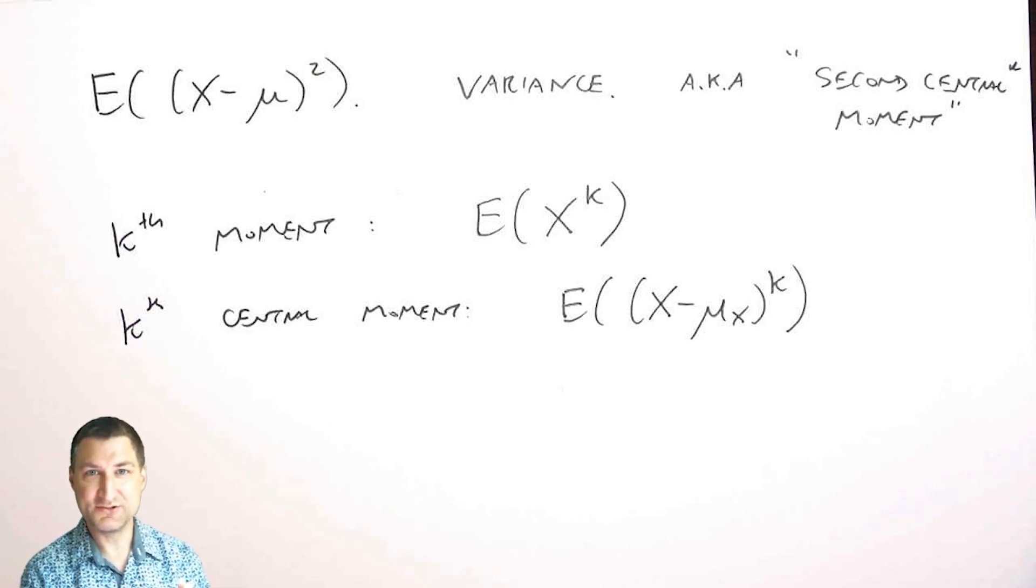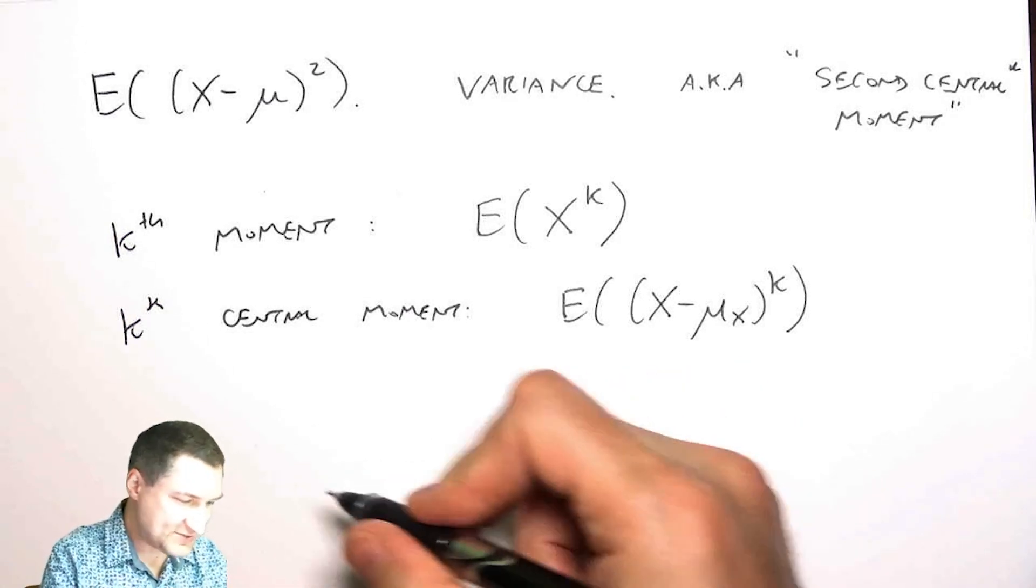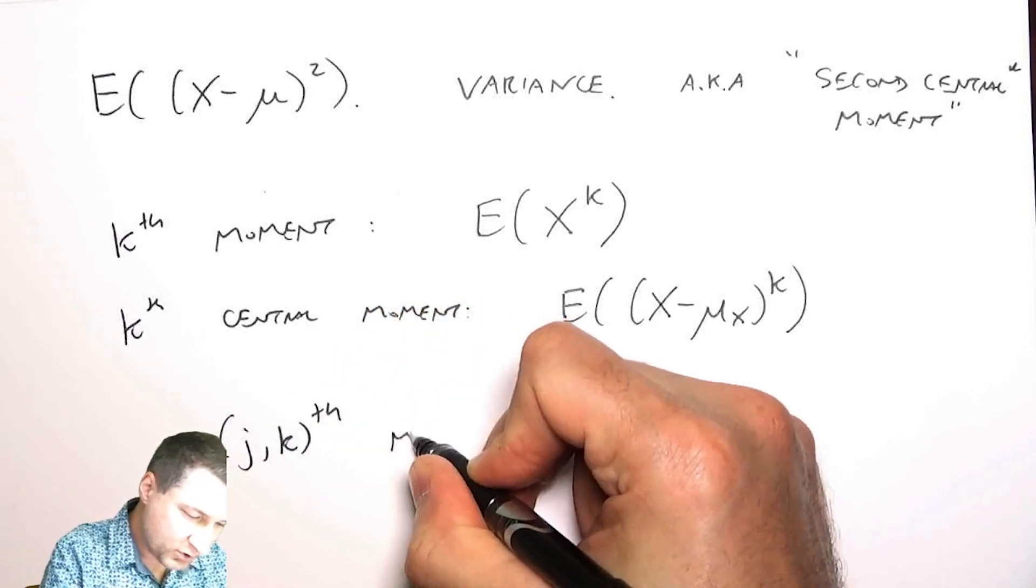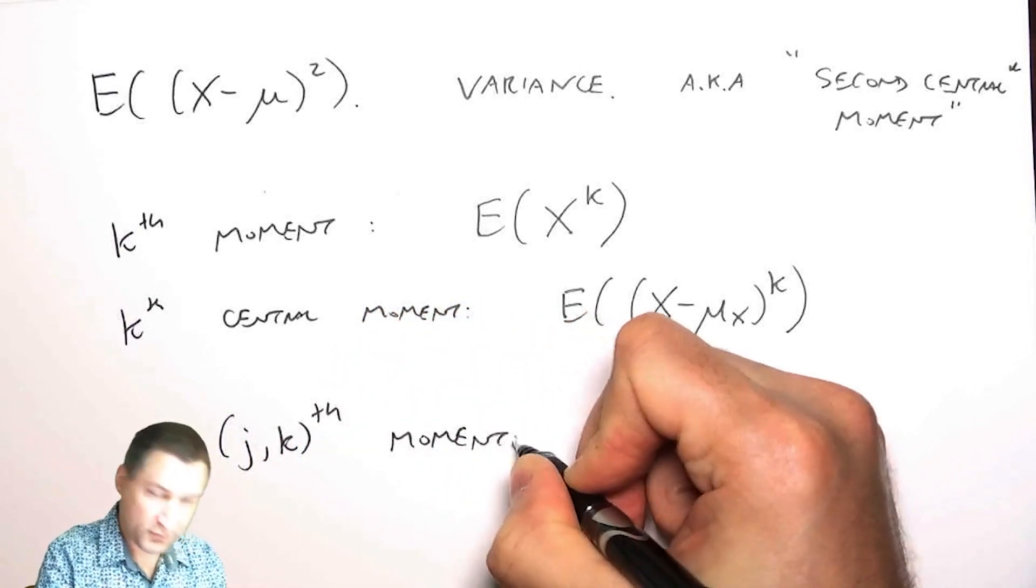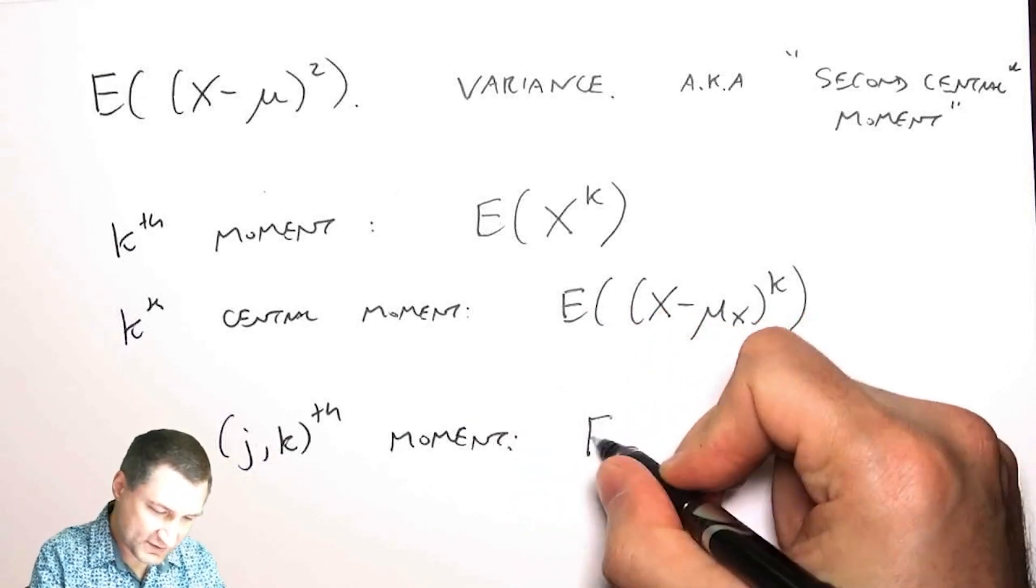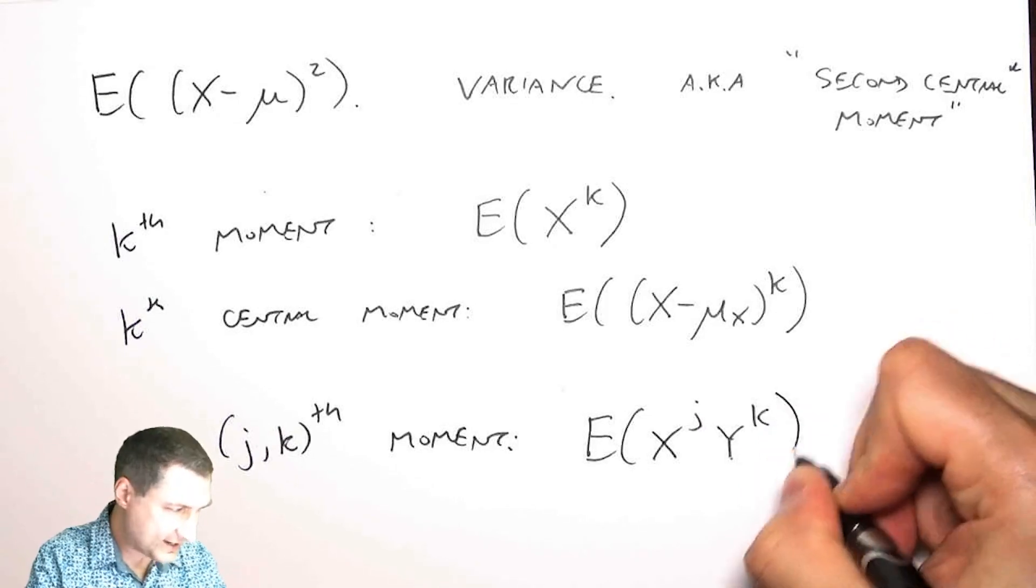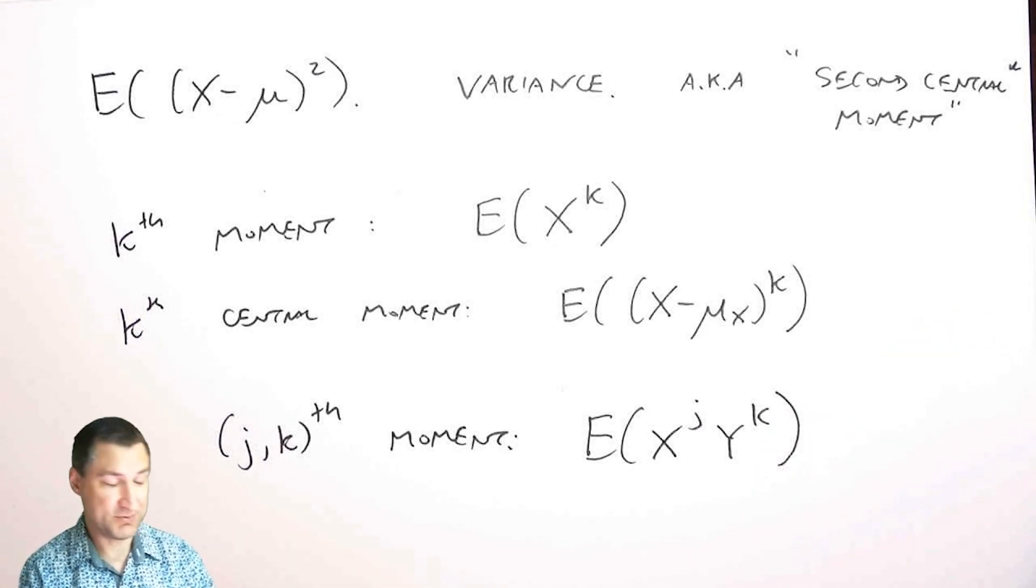Now, when I got two random variables, then things are more complicated because I could have one power for X and one power for Y. So basically, there is such a thing as the j,kth moment for a joint random variable, which is basically the expected value of X to the j, Y to the k, which I would get using the sheet of paper previously where I'm integrating this function against the joint distribution.